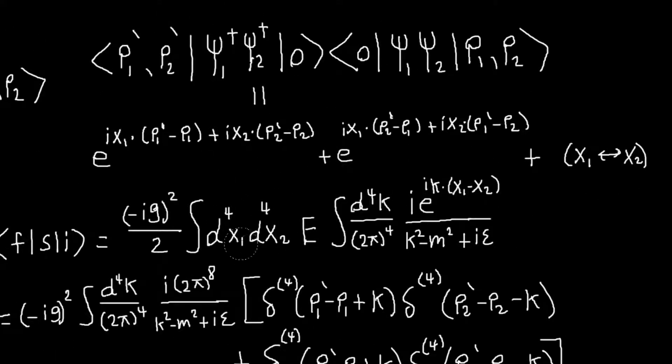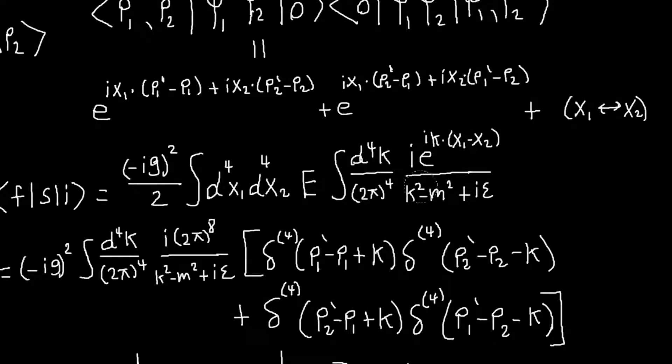Basically, you have this integral over spacetime, and you have, for example, this term in ix1 p1, p1 prime minus p1, and then also you have, from the Feynman propagator, an ikx1, so that will give me a four-dimensional delta function of p1 prime minus p1 plus k, and then this term will give you this guy, and this one will give you these ones.